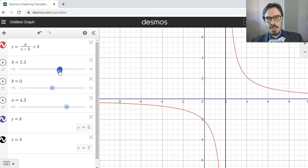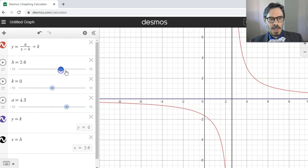But if I change h, I've changed my x equals h asymptote. And if I change k, I've changed my y equals k asymptote.